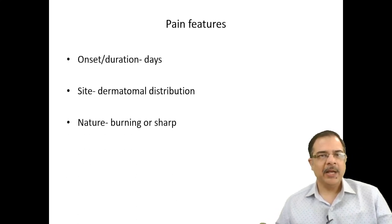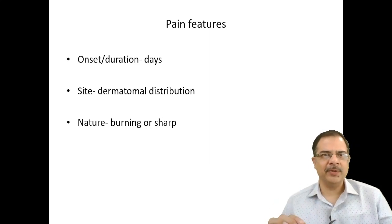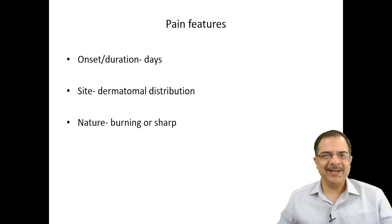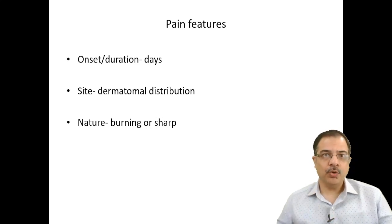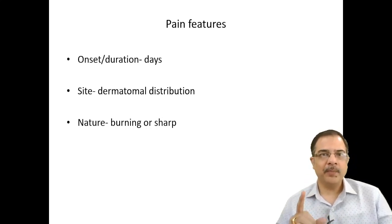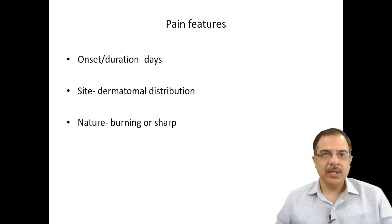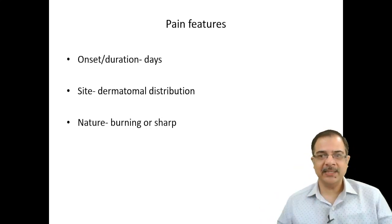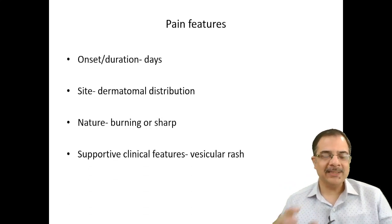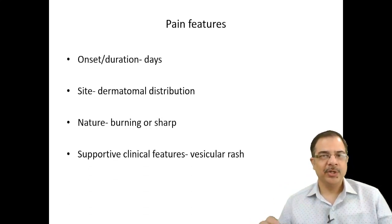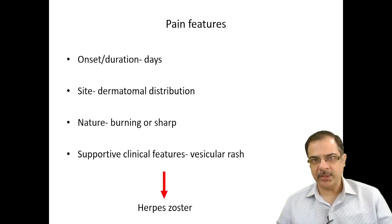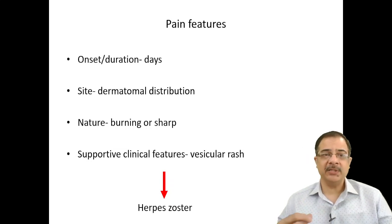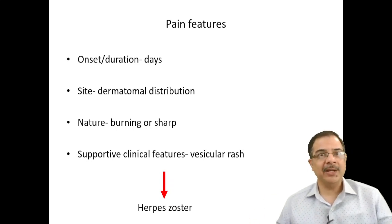Pain of days' duration in a dermatomal distribution of a nerve, described as burning or sharp — whenever such features are present, do a proper skin inspection. Ask the patient to remove their clothing and examine the skin area. You may find vesicular rashes: this is herpes zoster. Keep in mind that pain can come first, followed by the rash, so the patient may not have noticed the rashes yet.